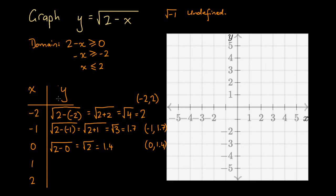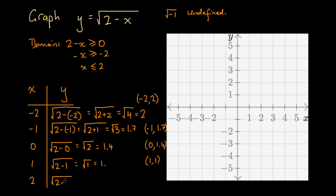For x = 1, we have y = √(2 minus 1) = √1. Since 1 times 1 is 1, the square root of 1 is 1. So the point is (1, 1). Finally, for x = 2, we have y = √(2 minus 2) = √0. Since 0 times 0 is 0, the square root of 0 is 0. So the point is (2, 0).